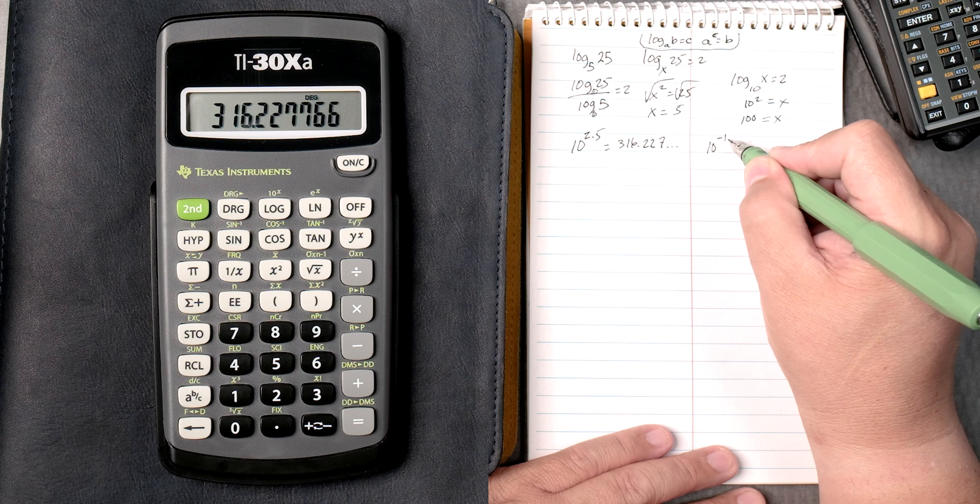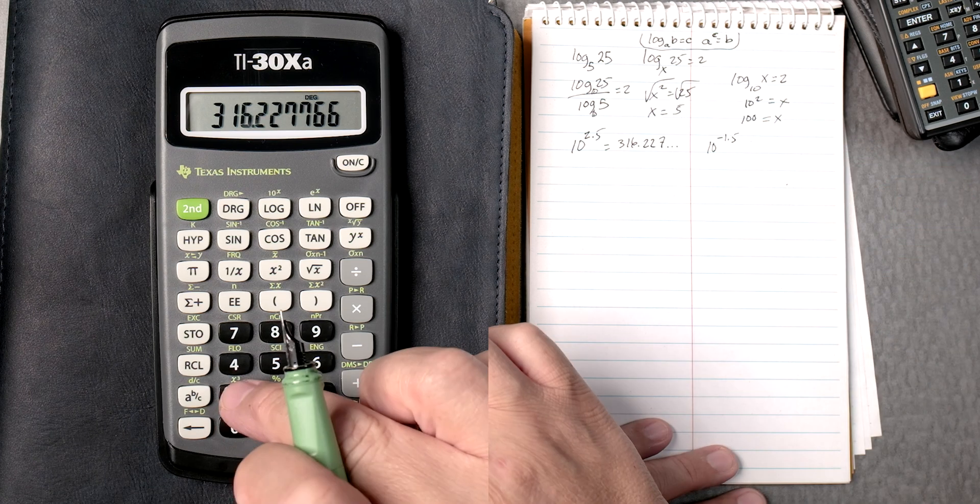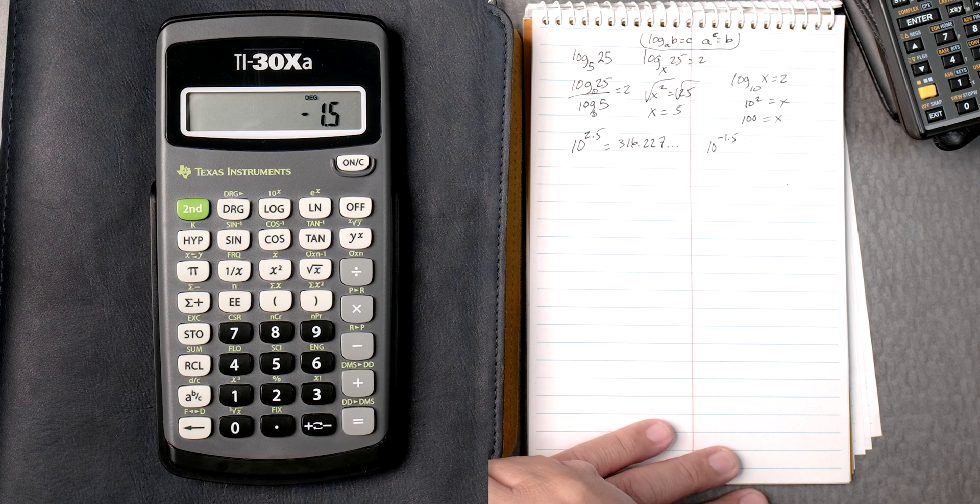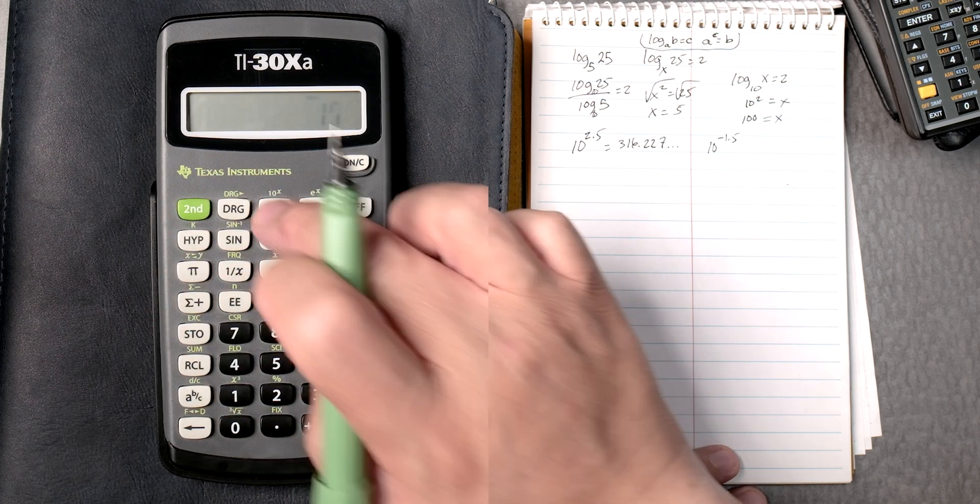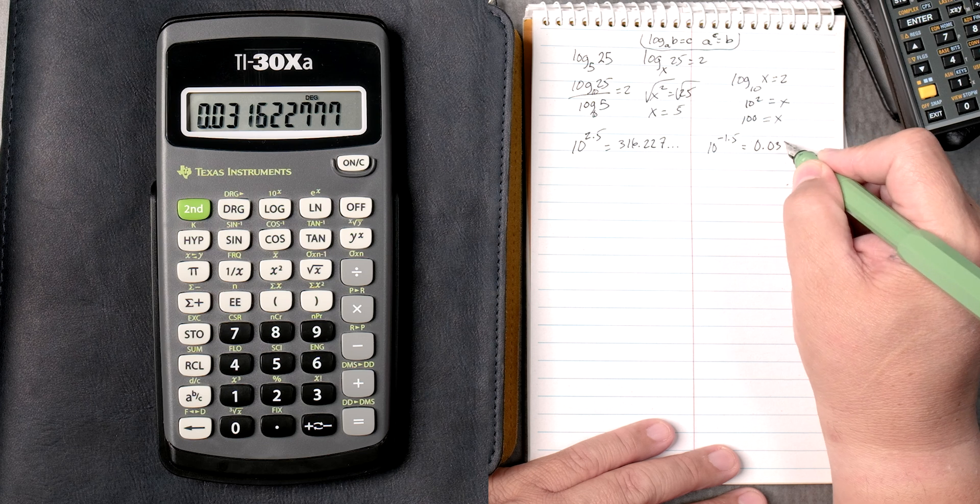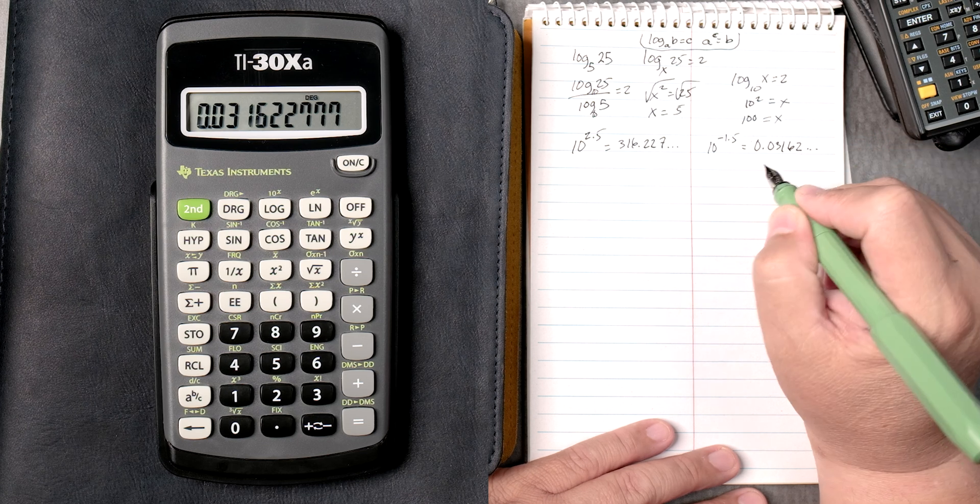10 to the minus 1.5, so we do 1.5 plus our minus key, second, log, for the antilog, 0.03162, and so forth. Perfect.